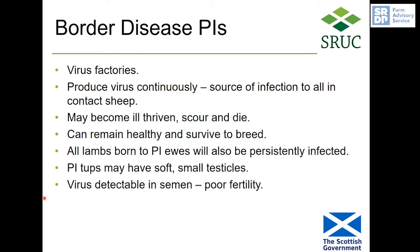Persistently infected lambs are virus factories. They produce virus continuously from birth and are a source of infection to all in-contact sheep. They can remain healthy, appear normal, and survive to breeding age, but many will become ill-thriven, scour, and die perhaps around weaning time. Importantly, if they survive and produce lambs of their own, all their lambs will also be persistently infected. If a tup is infected with border disease from birth, the virus is detectable in his semen and he is often poorly fertile.